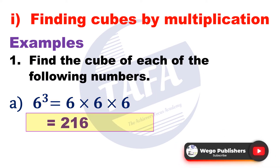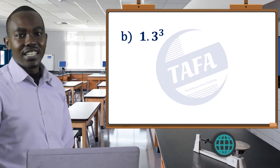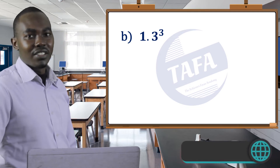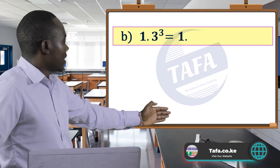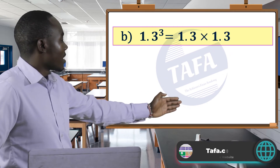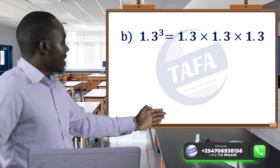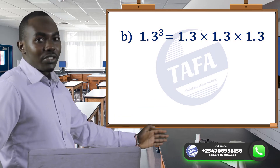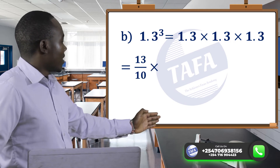The cube of another number, 1.3 — which is a decimal number — equals 1.3 multiplied by 1.3 multiplied by 1.3. Now, 1.3 can be written as a fraction: 13 over 10.